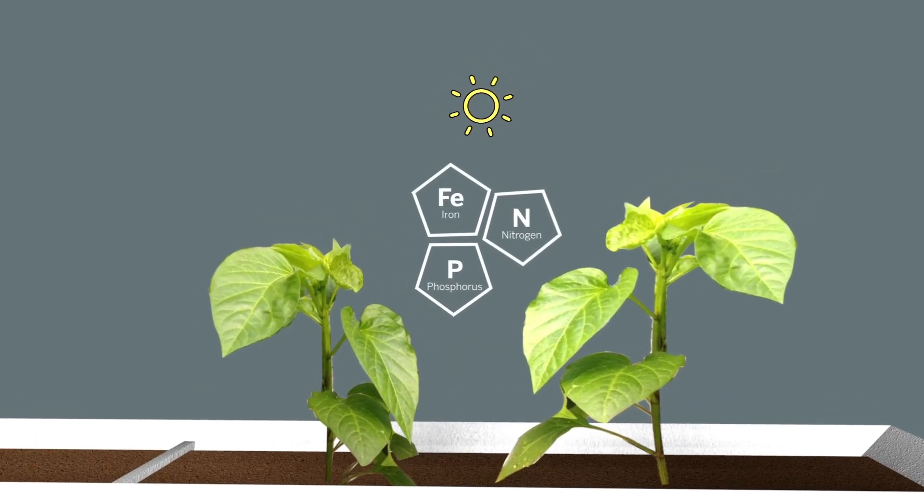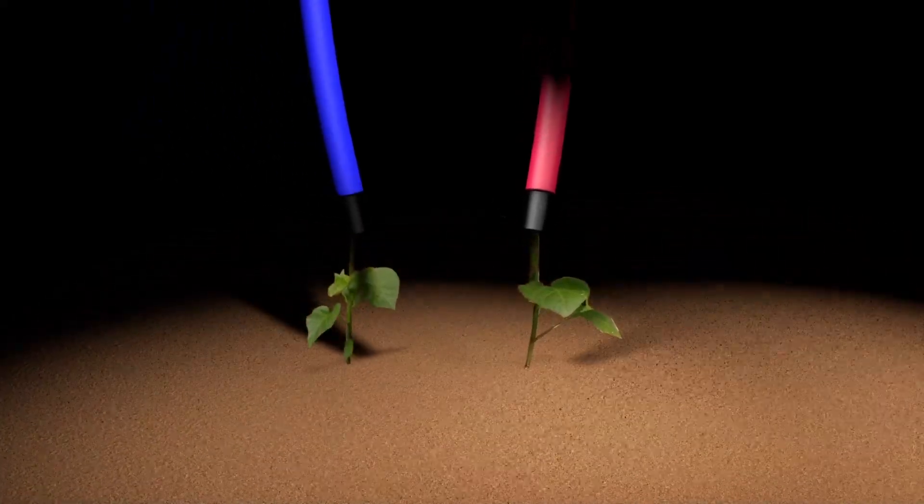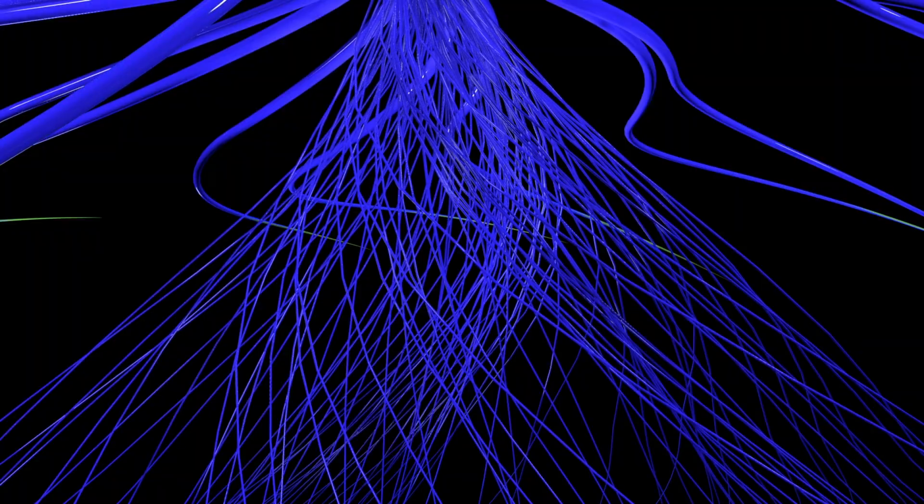As the plants grew, scientists injected the plant stems with red and blue dyes so that they could distinguish between the roots of competing plants.